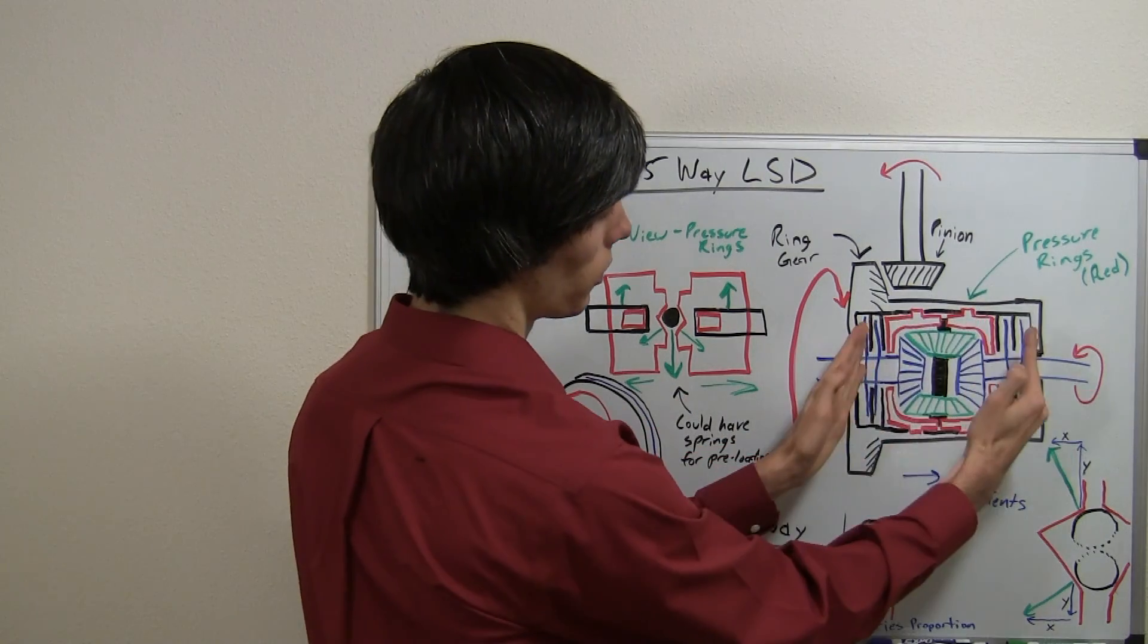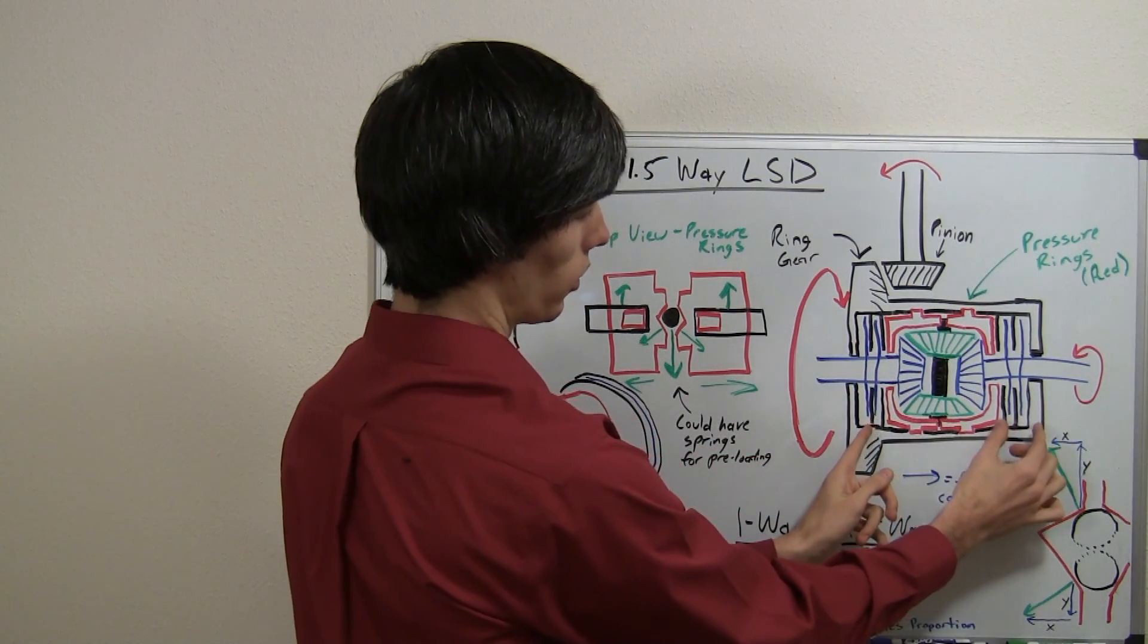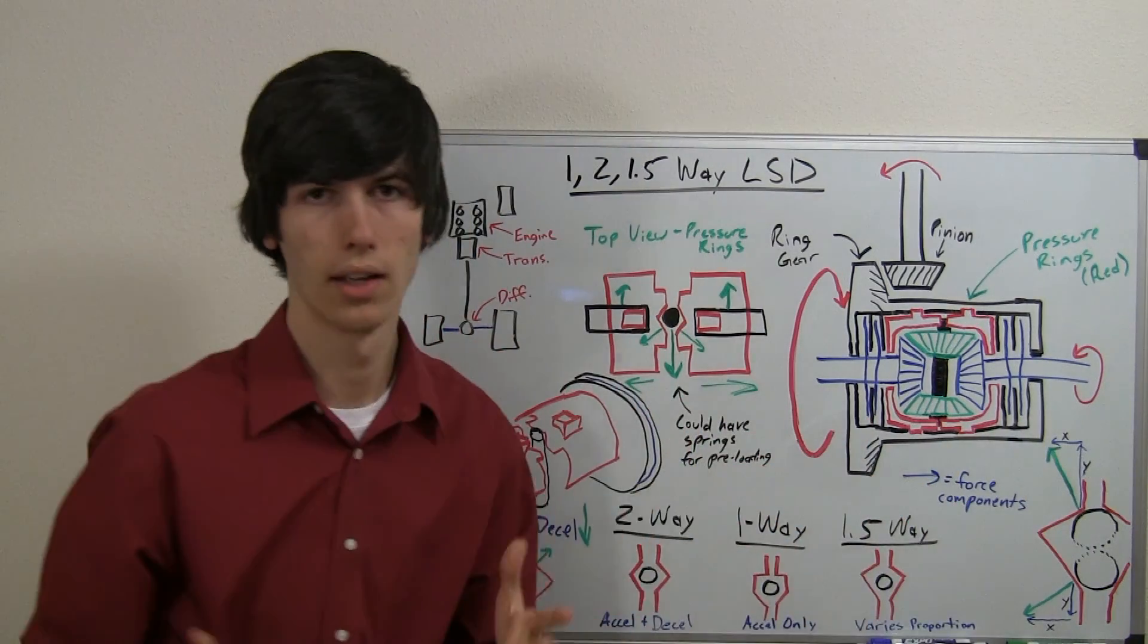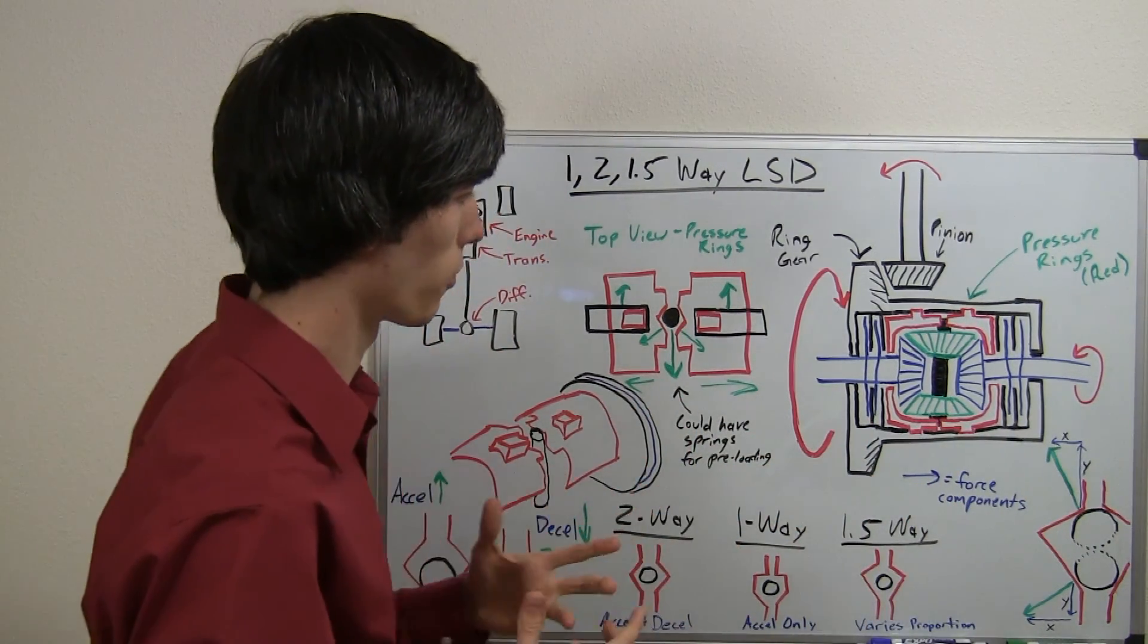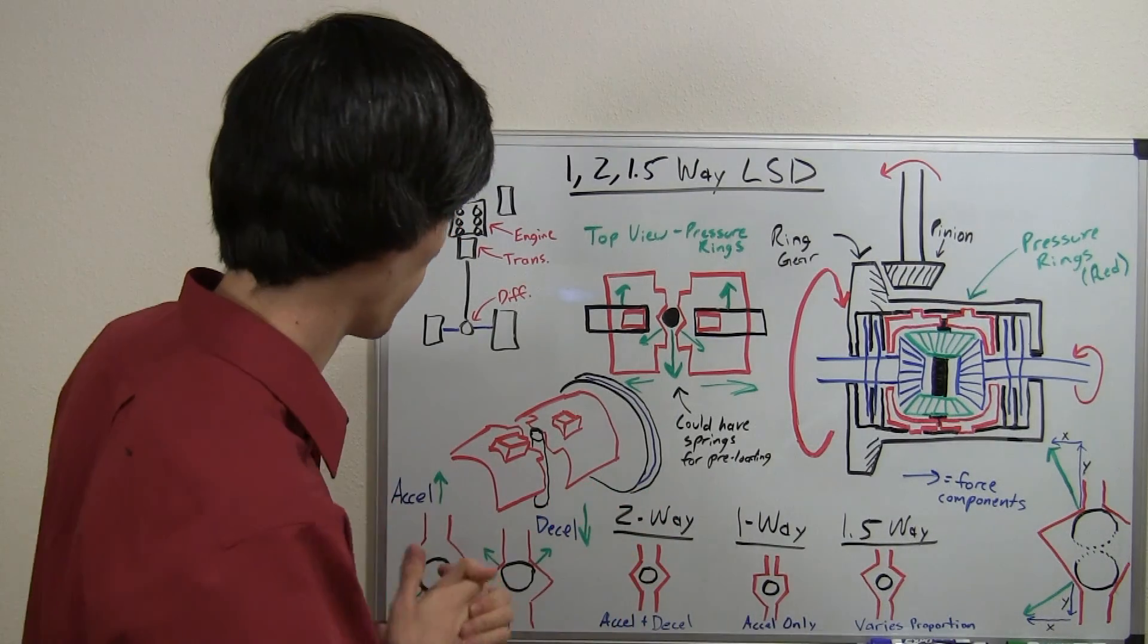And it's going to force these pressure rings to move outward and compress these two clutch packs, thus locking up the differential, or at least adding a substantial force that tires have to overcome before they can slip.